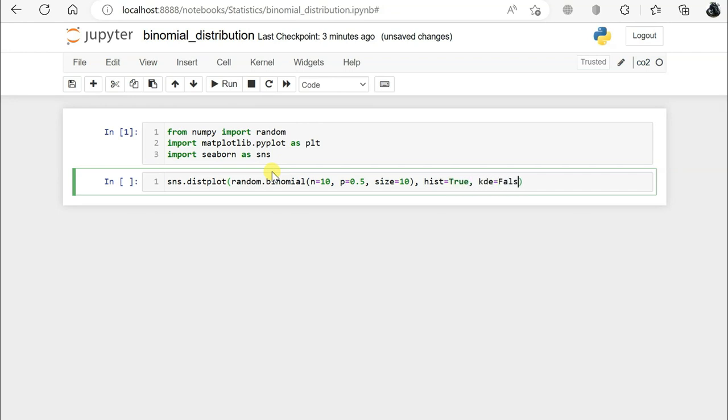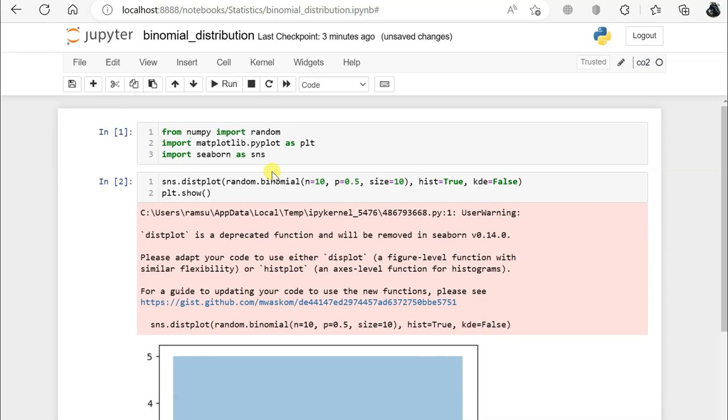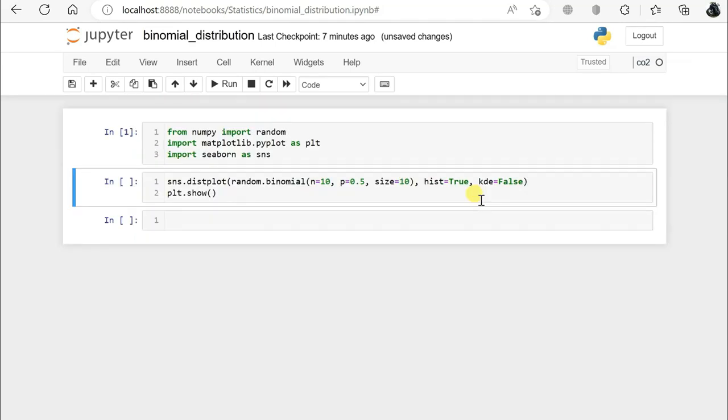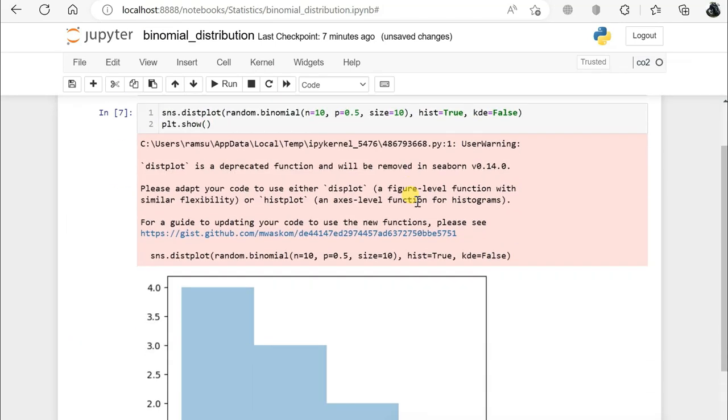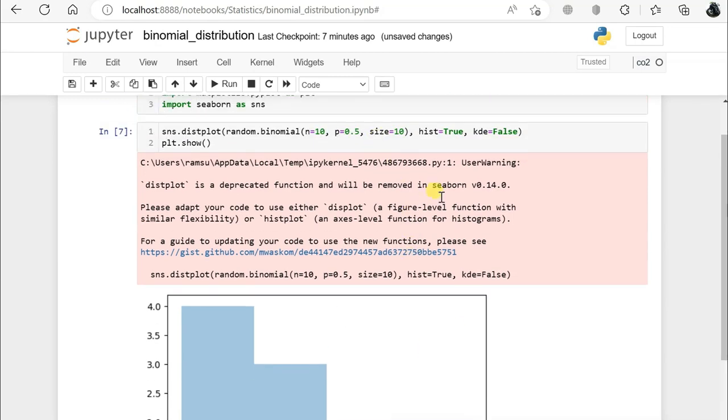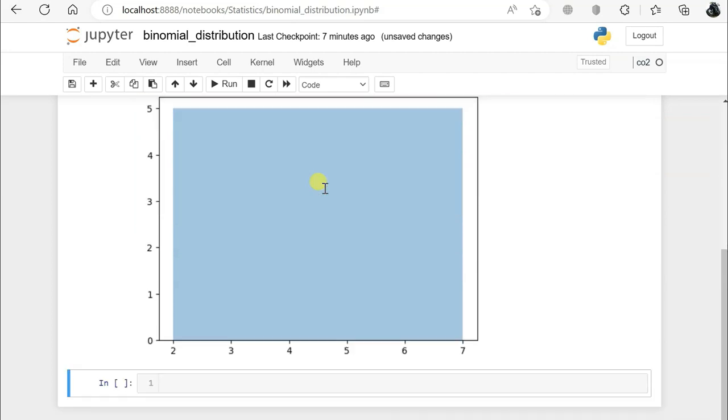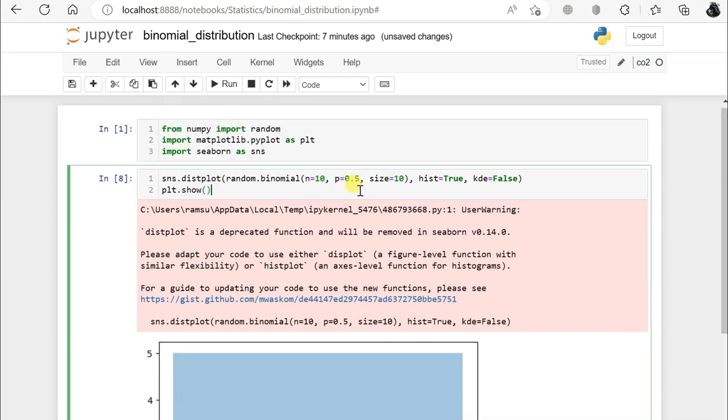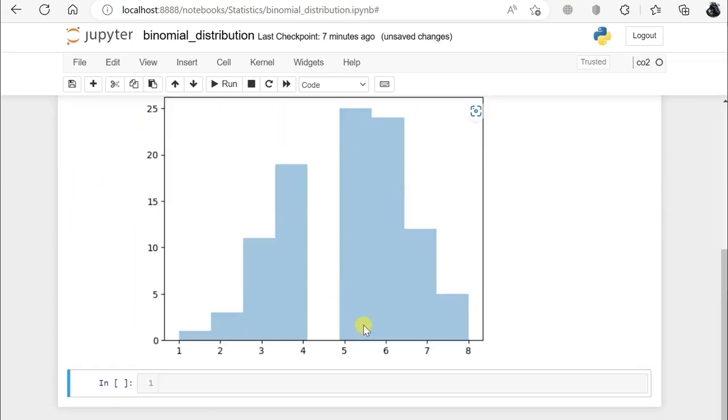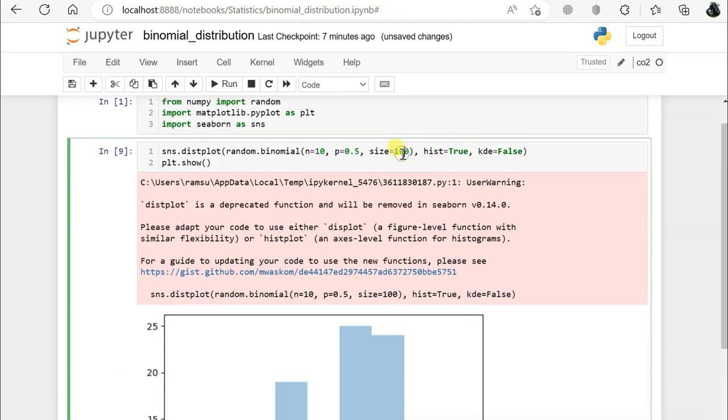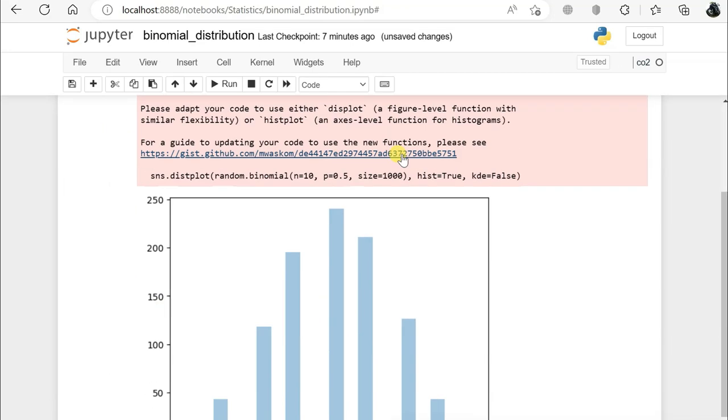Now plt.show. We just have to run it multiple times to see the distribution. Every time you run the distribution, it will show you differently. Let's increase the size to 400. Now you will see the distribution in a different way. Let's increase the size to 1000.